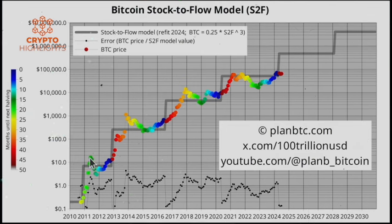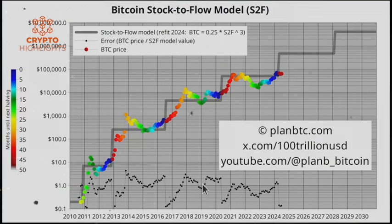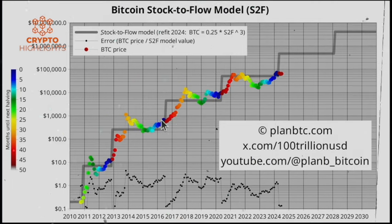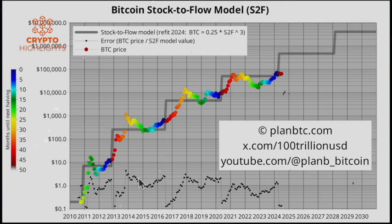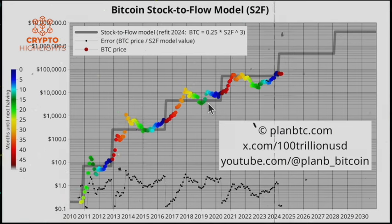There are three lines in the chart: the price chart — that's the colored dots with the color overlay — then there's the model in the gray line, and there's the error of the model, basically the difference between the model and the actual price. The stock-to-flow model is basically just a fit through the data points. Normally you would see a straight line fit, a log-linear model. You also see smooth curved lines which on log-log would be a straight line — a power law. But my eye caught something different, and that's why I use this step function.